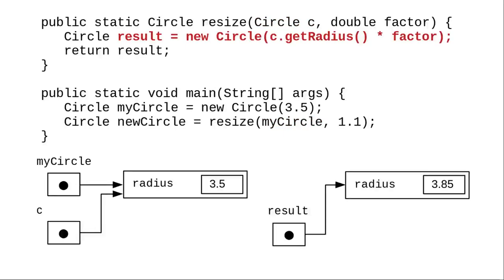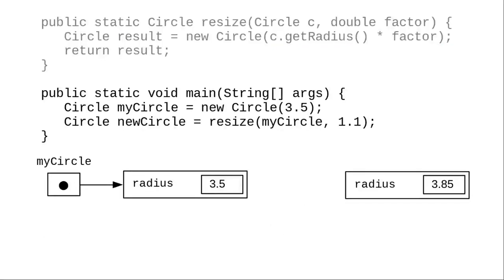But this time, we create a new circle object with the updated radius and return that new object. A reference to that returned object is stored in newCircle, leaving the original myCircle untouched.